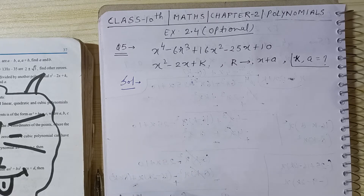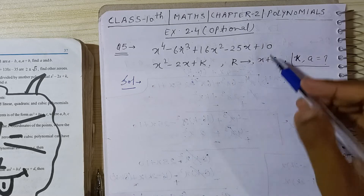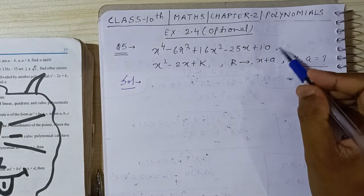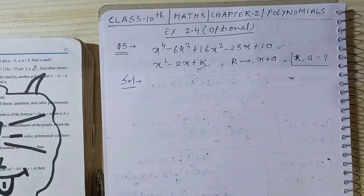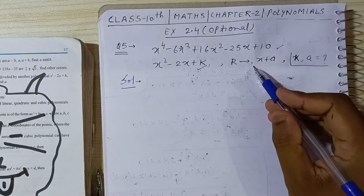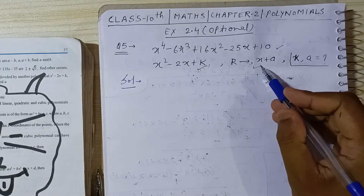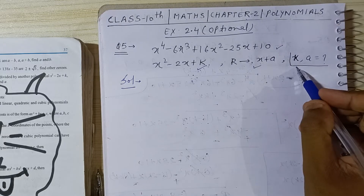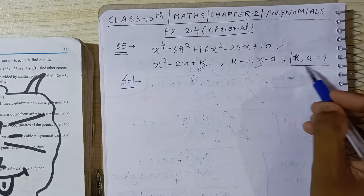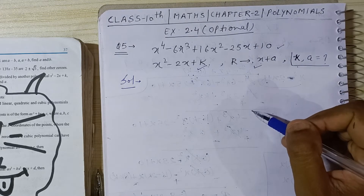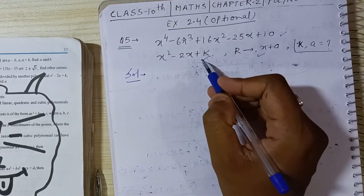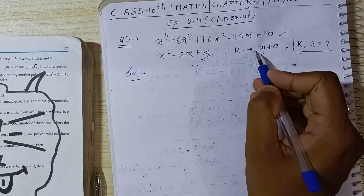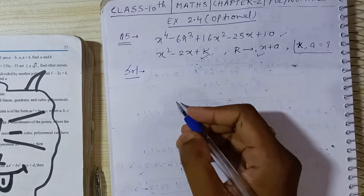Let's solve the question. The question states: if this polynomial is divided by the polynomial x squared minus 2x plus k, and the remainder that comes is equal to x plus a, then find the value of k and a. So when I divide this polynomial by this polynomial, I get this remainder.